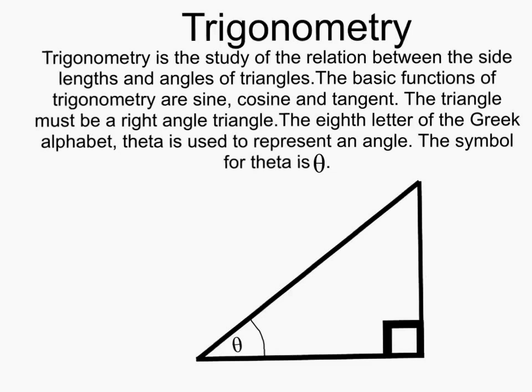The basic functions of trigonometry are sine, cosine and tangent. The triangle must be a right angle triangle. The eighth letter of the Greek alphabet, theta, is used to represent an angle. The symbol of theta is this.